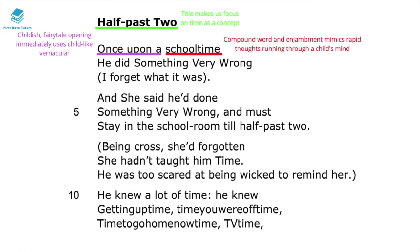The compound word 'school time' and the enjambment at the end mimic the rapid thoughts running through this child's mind as we learn he is in detention. The phrase 'something very wrong' uses capitalisation to echo the teacher's admonitions, and since we see things through this child's lens, he feels really guilty for doing this terrible action.